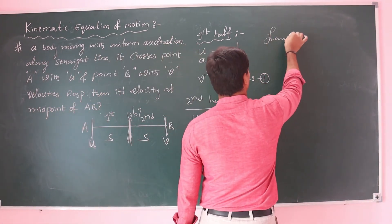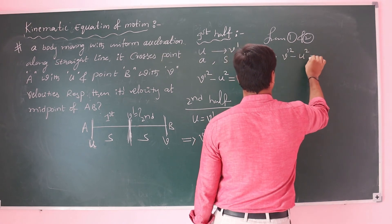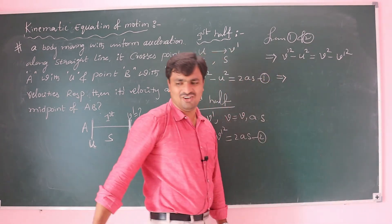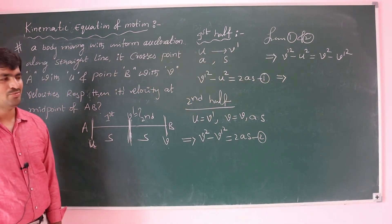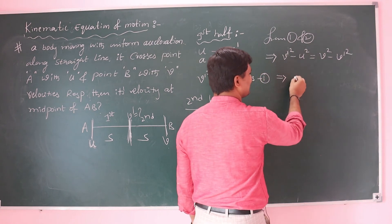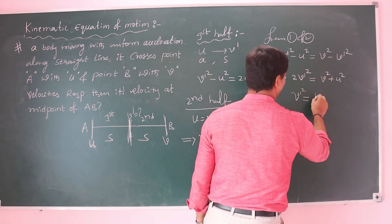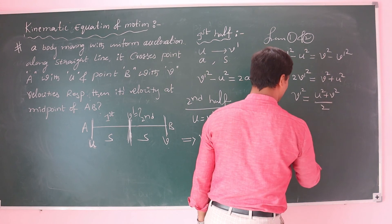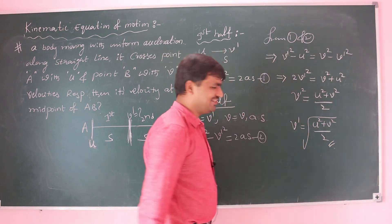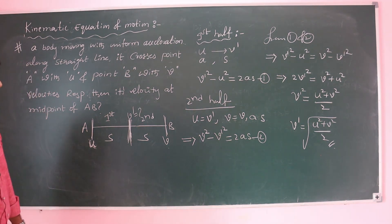Equating equation 1 and equation 2: V dash² minus u² equals V² minus V dash². Rearranging, 2 V dash² equals u² plus V². Therefore V dash² equals (u² + V²) / 2, and V dash equals the square root of (u² + V²) / 2. This is the velocity at the midpoint of AB.